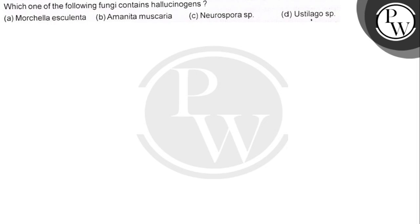Hello Bacho, the question is: which of the following fungi contain the hallucinogen? Option A, Morchella esculenta. Option B, Amanita muscaria. Option C, Neurospora species. And Option D, Astridoga species.